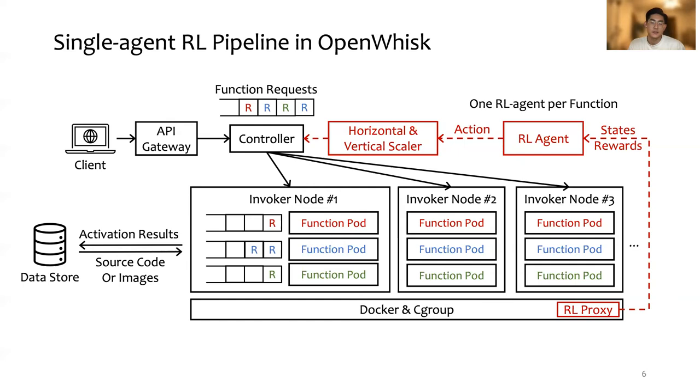Horizontal scaling means to scale in or out the number of function containers, and vertical scaling means to scale down or up the CPU shares and memory limits of function containers. The actions are then passed to the FaaS controller to be executed.